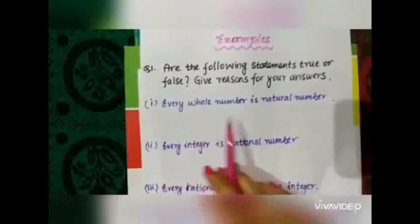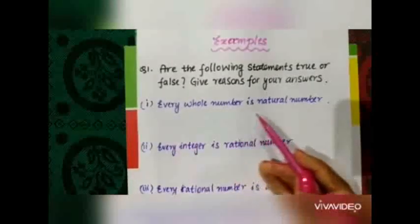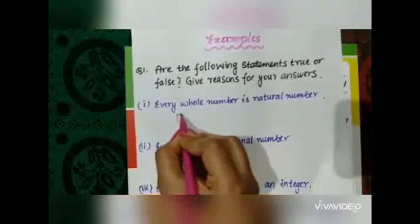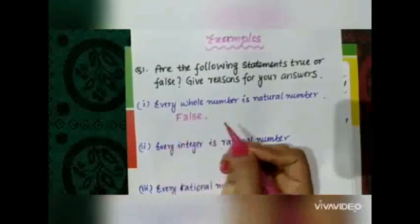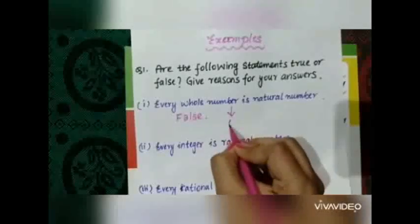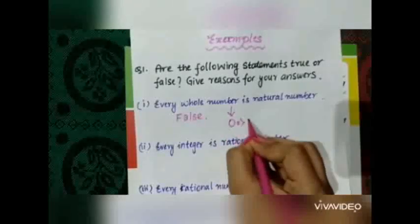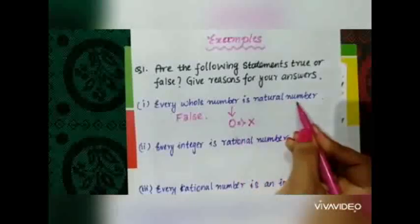The first statement is: every whole number is a natural number. This statement is false because the whole number includes 0. So 0 is not a natural number. And hence, the statement is false.